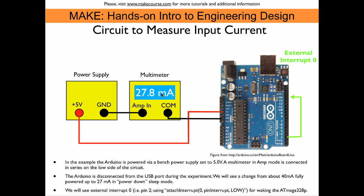The remaining 27 milliamps after powering down the ATmega chip goes into the voltage regulators and the ATmega chip handling USB communication. To fully take advantage of power-down mode savings, one would need to build a separate circuit using only the ATmega328P chip without all the overhead on the Arduino UNO board. Nonetheless, this represents about a 30% power savings, meaning you could expect about 50% longer operating times on a battery.